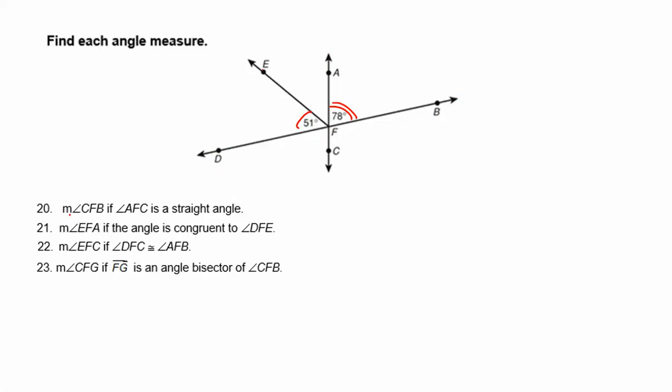For number 20, it says find the measure of angle CFB, that's this one down here, if angle AFC is a straight line. Well, that means that this is 180 degrees. Straight lines are always 180 degrees. So that means we're going to use the angle addition postulate.